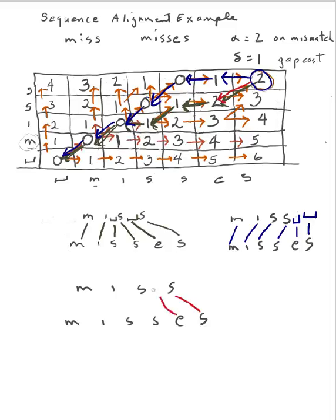Then this one right here — rather than advancing on both — I'm going to advance on 'misses' but not on 'miss', so a blank there. And now at this point I follow this track down, which I've already done right here. I think those are the only three possible alignments I can obtain by starting at the optimal alignment here and backtracking through my optimum weights. So that's the end of this example.